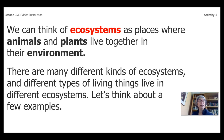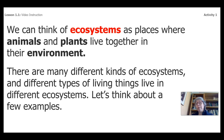There are many different kinds of ecosystems and different types of living things live in different ecosystems. Let's think about a few examples. I'm going to show you five examples of different ecosystems found around the world, and we're going to ask some questions and jot some things down.